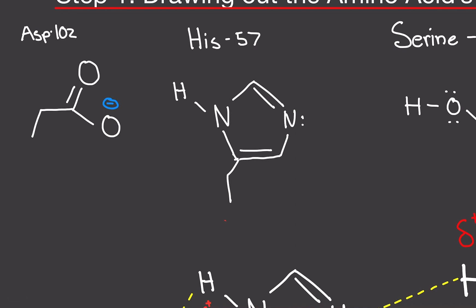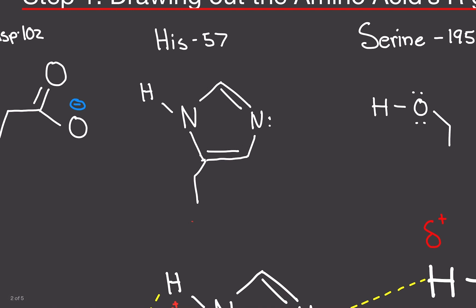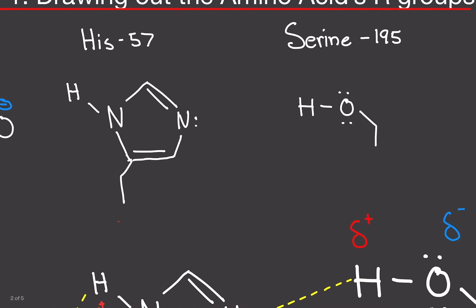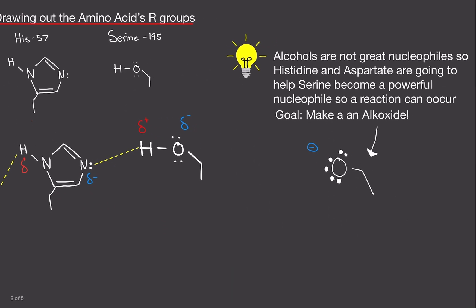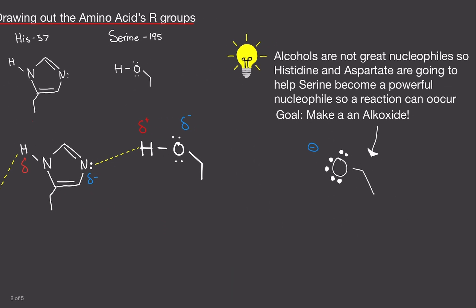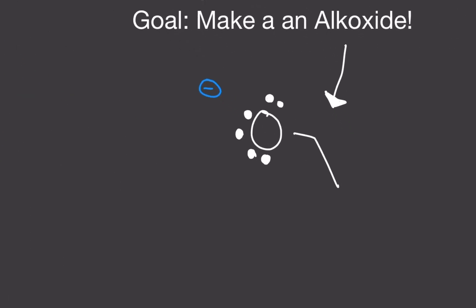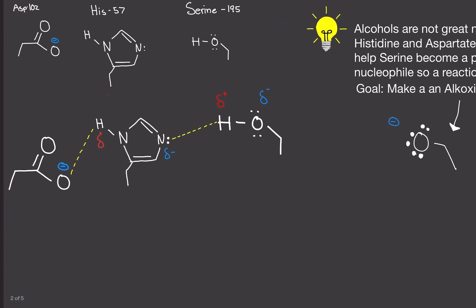So that's where histidine and aspartate are going to come. These two amino acids, aspartate-102 and histidine-57, are basically going to be buddies to serine. They're basically going to say, hey, serine, I see that you're going to try to attack this protein, this amino acid here to break it down. I see that you're not strong enough right now, but let me help you out, and we'll make you stronger. So that's exactly what's going to happen here. I just said that alcohols are not great nucleophiles. So our goal here is we're trying to make an alkoxide. So this is what an alkoxide looks like. So let's start here.